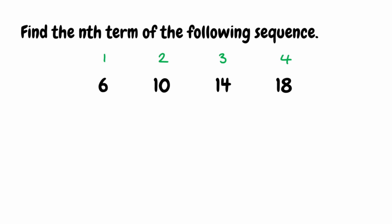The first step to find the nth term of this sequence is to find out what's happening to get from term to term. How are we getting from 6 to 10? We get from 6 to 10 by adding 4. Then from 10 to 14, we also add 4. And from 14 to 18, we're also adding 4.